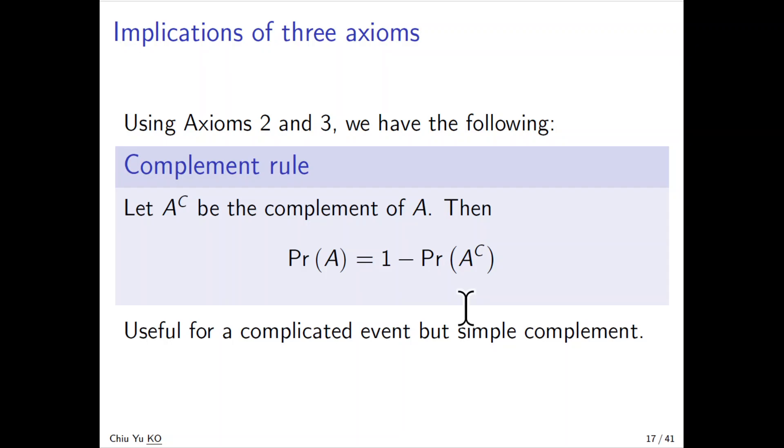The next we came up with some implication. There will be three implications. The first one will be complement rule. The complement will say how to calculate the probability by using complement. If A^C is the complement of A, then probability of A will be 1 minus the probability of the complement.